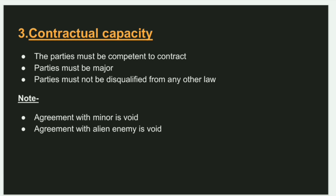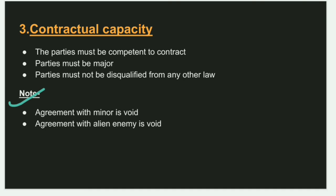The third essential is contractual capacity. Both parties should be competent to contract. Competent means the parties should be major, meaning 18 years or above, and should not be disqualified under any law. For example, an agreement with a minor is void, and an agreement with an alien enemy is also void.